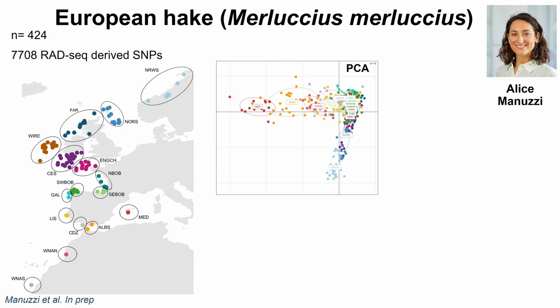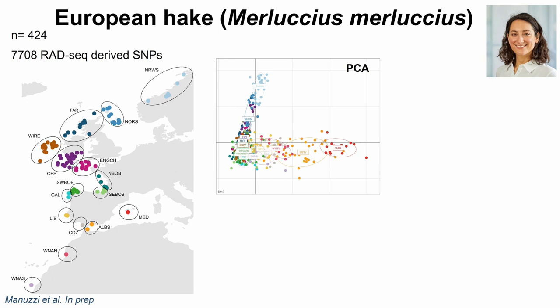When you turn the PCA around, it essentially becomes the map of Europe — you can see the Norwegian Sea, North Sea, Faroes, Mediterranean, and Alboran Sea. Just by doing this PCA, we already observe something very clear: the closer the hakes are geographically, the more similar they are genetically. This may seem trivial but it's not so often we see something like this in fish, so we were really excited.